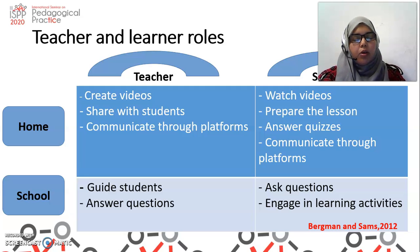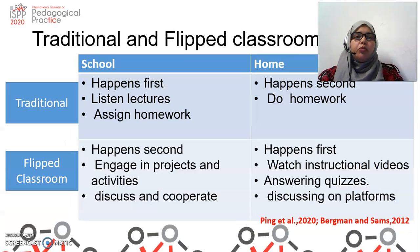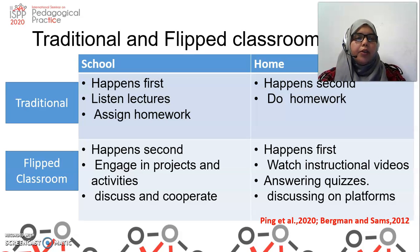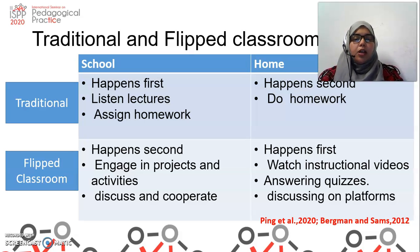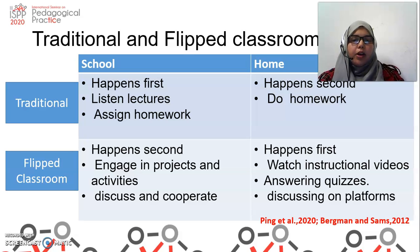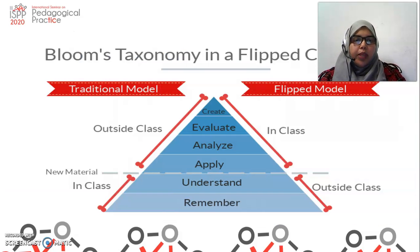What is the difference between the traditional and the flipped classroom? In the traditional classroom, learners listen to lectures at school and the teacher assigns homework that students do at home — school happens first and home happens second. But in the flipped classroom, students watch instructional videos at home, answer a quiz, and discuss on a platform with teachers or colleagues, then go to school to engage in projects and activities.